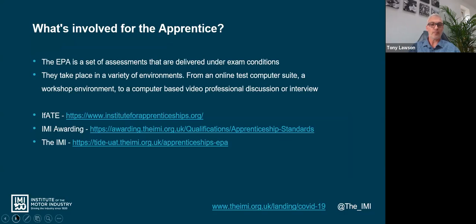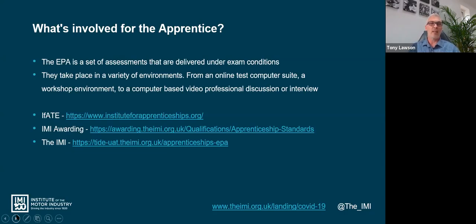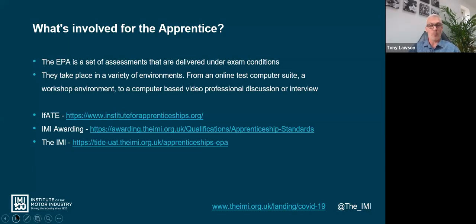What's involved for the apprentice? EPA is a set of assessments delivered under exam conditions - the easiest way to compare is like GCSEs or A-levels. They are controlled exams set at specific dates and times and conducted and observed by independent assessors. Nobody else is involved within the assessment. If an apprentice doesn't turn up for their exam at the agreed time with no justification, that will be documented as a fail, the same as it would be for any other exam.